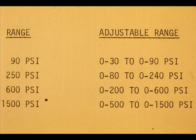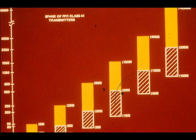The adjustable range for a given pressure meter body is normally 3 to 1. For example, the 90 PSI one can be calibrated from 0 to 30 to 0 to 90 PSI. The range ability can be turned down to 5 to 1 if required. The ranges are shown graphically here.